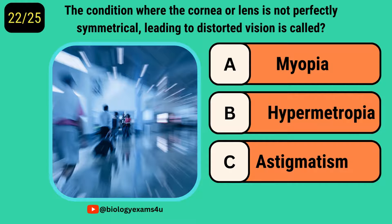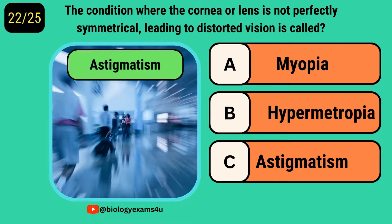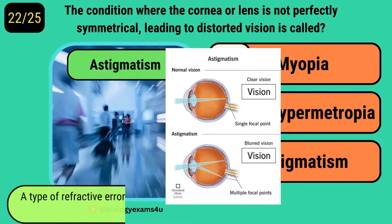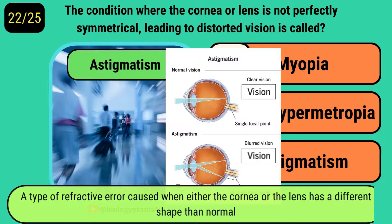The condition where the cornea or lens is not perfectly symmetrical, leading to distorted vision, is called? It is called astigmatism, a type of refractive error caused when either the cornea or lens has a different shape than normal.